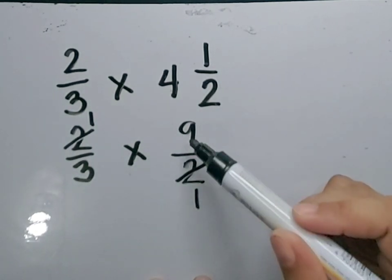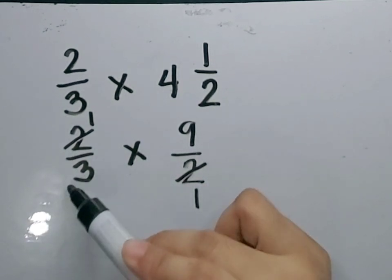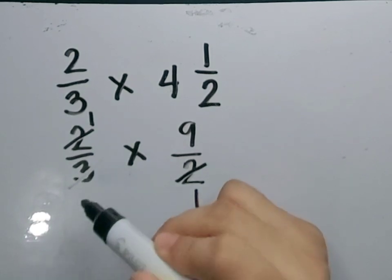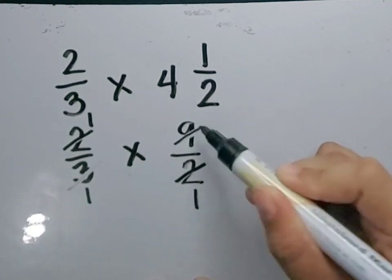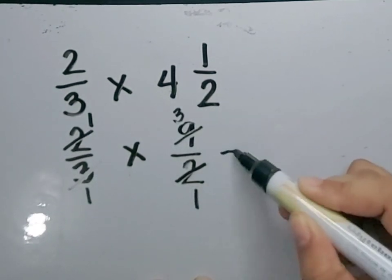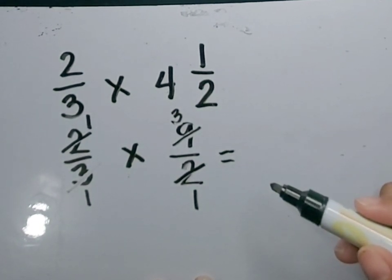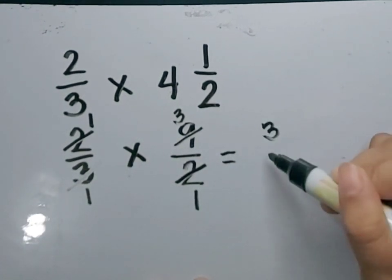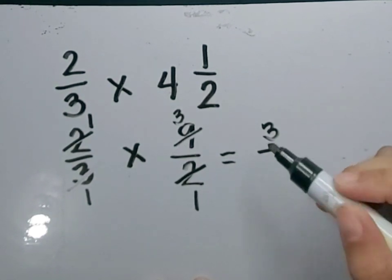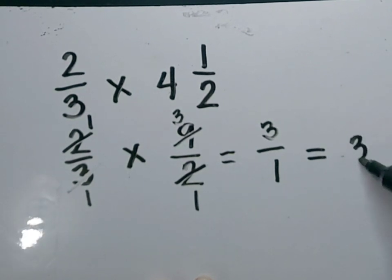Another set — we have 3 and 9. The GCF of 3 and 9 is 3. Let's divide them by 3. 3 divided by 3 is equal to 1. Let's cancel 3. 9 divided by 3 is equal to 3. Now let's multiply numerator by numerator and denominator by denominator. 1 times 3 is equal to 3, and 1 times 1 is equal to 1. Our final answer is 3.